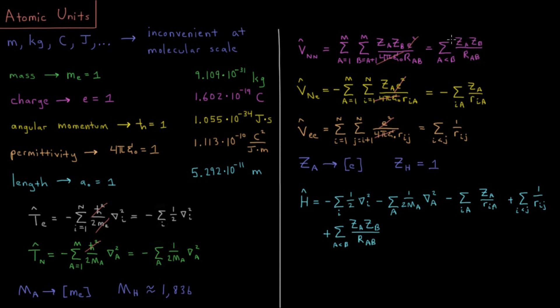So that gives us for each of those terms just za zb over rab. Number of protons in each nucleus divided by the distance that the nuclei are apart. And then our unit of distance for rab would be in units of the Bohr radius, or Bohrs.